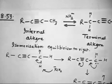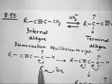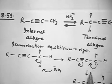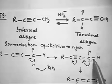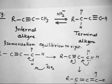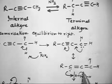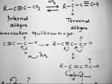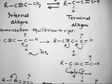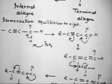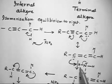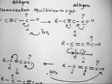Let me show the solution. You have an internal alkyne. NH2⁻ can take H⁺ from the CH3 group, so you have a negative charge on that carbon — giving a double bond with a negative charge on this carbon. Now this can isomerize via a resonance structure. This negatively charged carbon can then take H⁺ from ammonia (NH3).